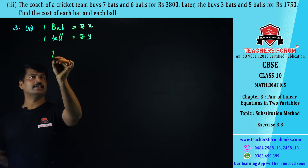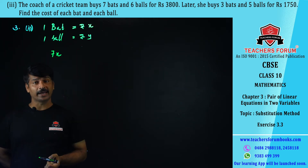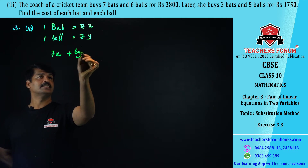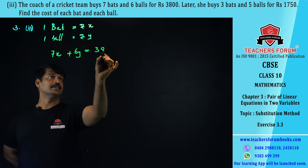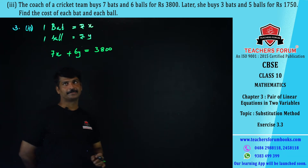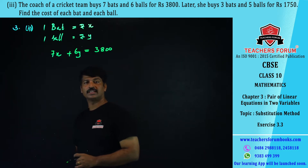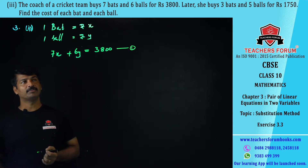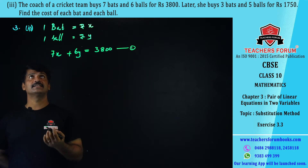The cost of six balls will be 6y. It is given that the total cost is rupees 3800 for seven bats and six balls. So the first equation is: 7x + 6y = 3800. This is equation number one. Now let us form the second equation — the coach later buys three bats.